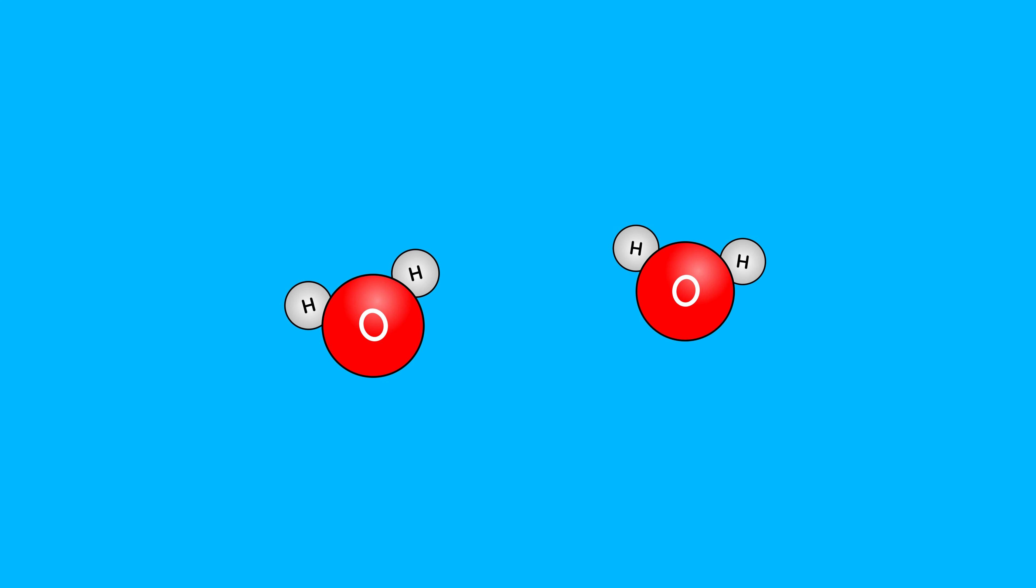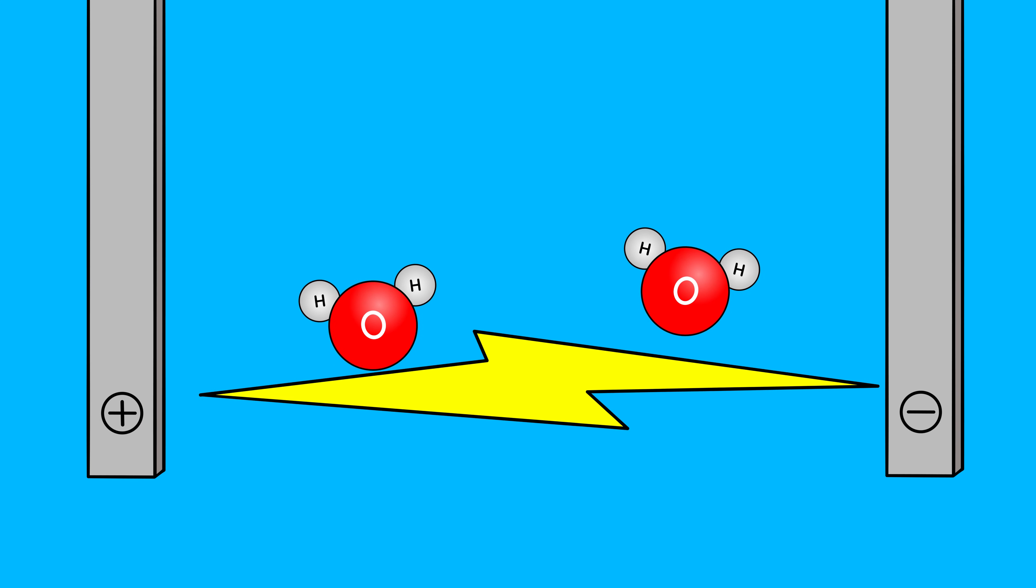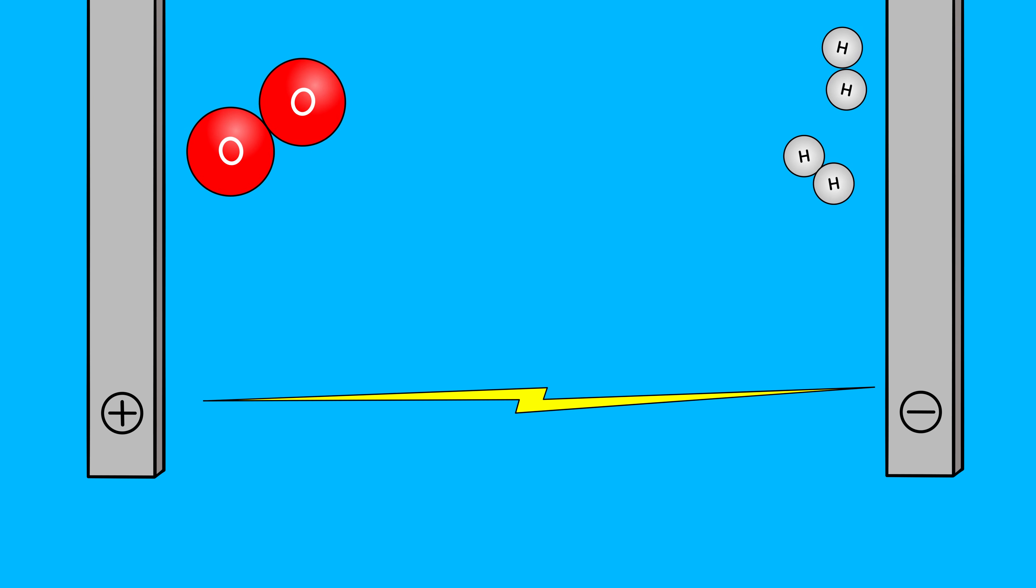Water molecules consist of two hydrogen atoms and one oxygen. So if we stick two electrodes in the water and zap it, we'll be able to separate oxygen from hydrogen and we're good to go. But there's a problem. Since pure water isn't very conductive,